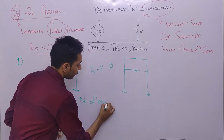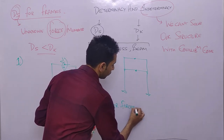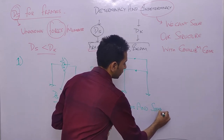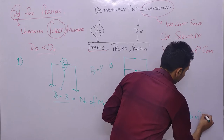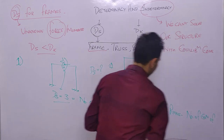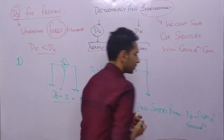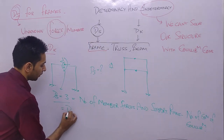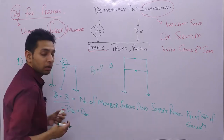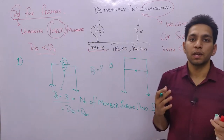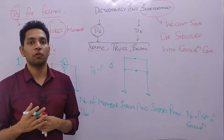The formula is: ds = (number of member forces + support reactions) minus (number of equilibrium equations). We can also write ds as the internal degree of indeterminacy plus the external degree of indeterminacy.